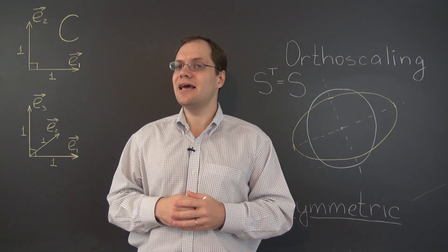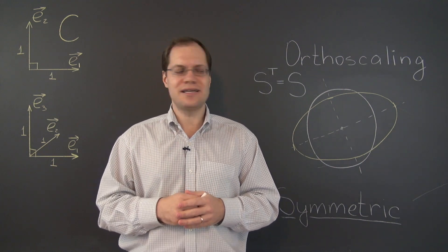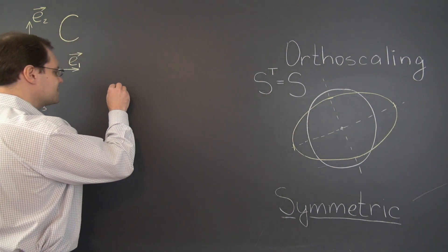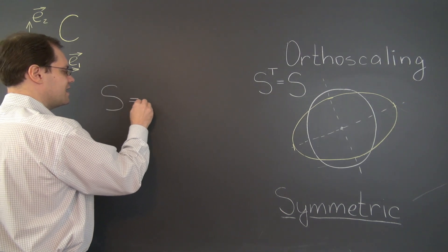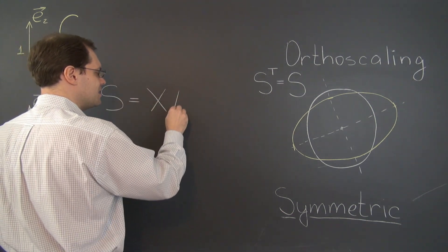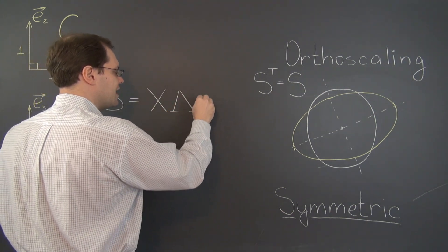It tells us that any matrix with a full set of eigenvalues and eigenvectors can be written as a product X, lambda, X inverse.